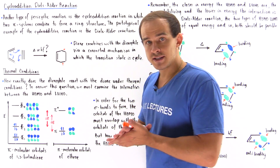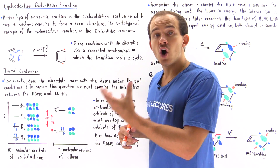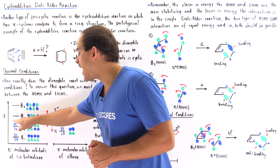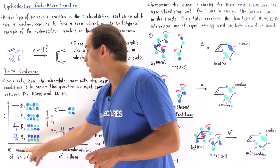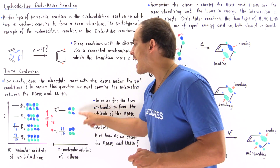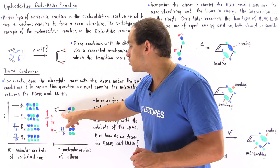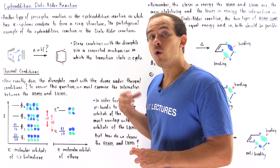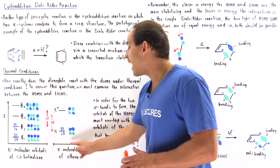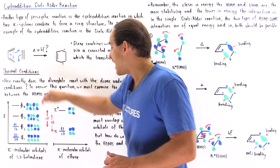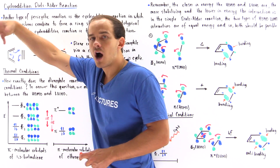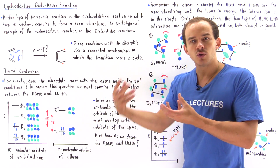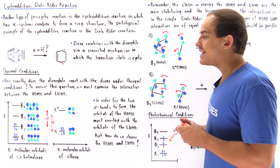We have two choices for the HOMO. If φ2 is the highest occupied molecular orbital on 1,3-butadiene, then the LUMO is π* on ethene. However, π on ethene can also be the HOMO, in which case the LUMO must be φ3 on 1,3-butadiene. So we have two combinations of HOMO-LUMO interactions. The question is, which one is correct?